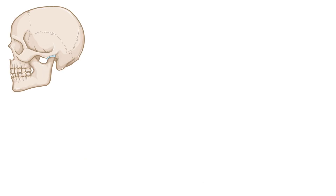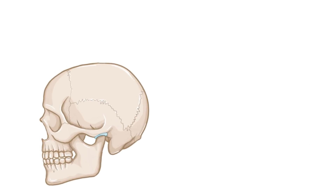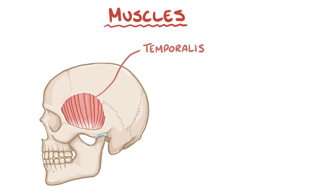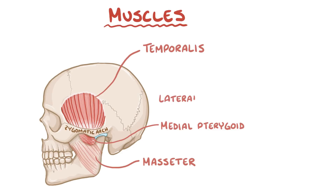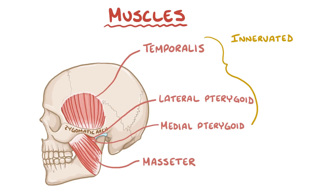The movements of the temporomandibular joint are coordinated by numerous muscles, including the temporalis, which is a fan-shaped muscle on both sides of the cranium; the masseter, which connects to the mandible and the zygomatic arch of the temporal bone; the medial pterygoid, which connects to the mandible and medial pterygoid plate; and the lateral pterygoid, found at the condylar process. These muscles are innervated by branches of the trigeminal nerve.